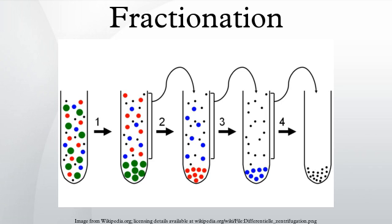Mixtures of liquids and gases are separated by fractional distillation by difference in boiling point. Fractionation of components also takes place in column chromatography by a difference in affinity between the stationary phase and the mobile phase. In fractional crystallization and fractional freezing, chemical substances are fractionated based on difference in solubility at a given temperature. In cell fractionation, cell components are separated by difference in mass.